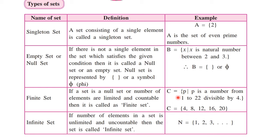Let's consider an example: C is the set of all p such that p is a number from 1 to 22 divisible by 4. The numbers between 1 to 22 divisible by 4 are 4, 8, 12, 16, and 20. All these numbers lie between 1 to 22 and are divisible by 4. We can count them as 1st, 2nd, 3rd, 4th, and 5th. Such sets are called finite sets.